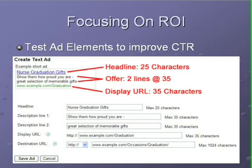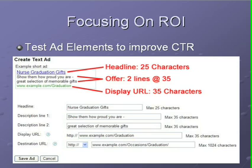Now let's talk about focusing your testing on the right ad elements. I want to make sure we're all speaking the same language. When I talk about the headline, I'm talking about the first 25 characters in your ad — the blue underlined link that Google displays. Then you have two lines of 35 characters, which represent your offer. Finally, you have a display URL shown at 35 characters, and a destination URL which tells Google where to send the traffic when someone clicks on your ad.